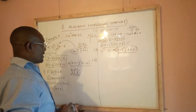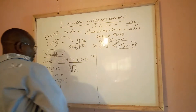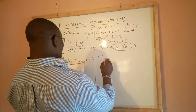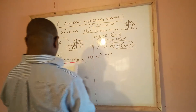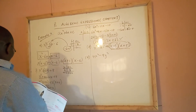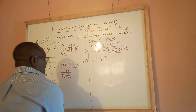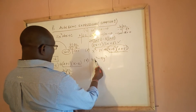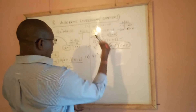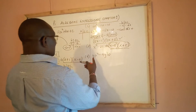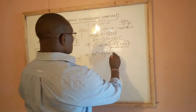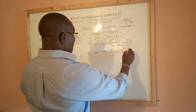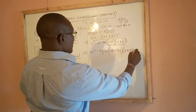Part e is 4x squared minus 9y squared. This is also a difference of two squares: 4 has a square root, x squared has a square root, 9 has a square root, and y squared has a square root. The square root of the first term is 2x and the square root of the second term is 3y, giving us (2x minus 3y)(2x plus 3y).